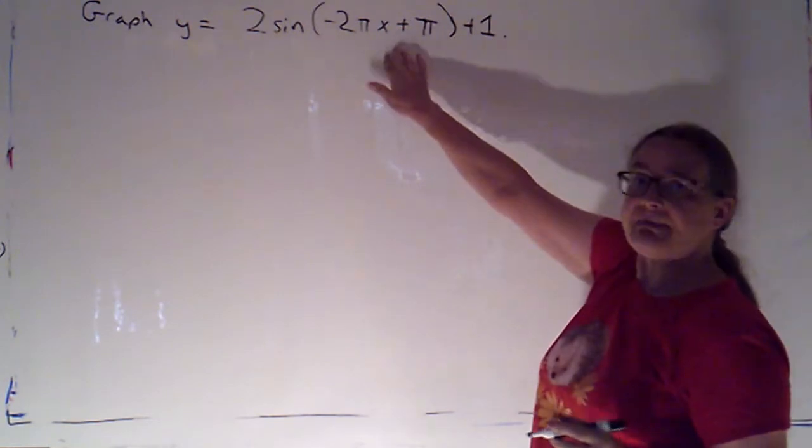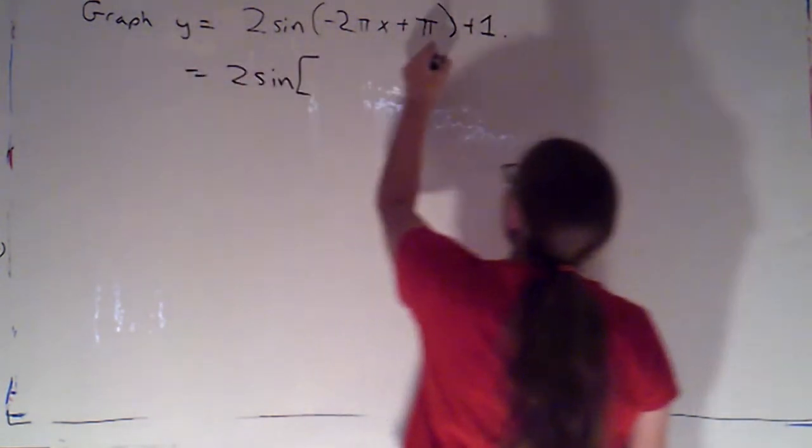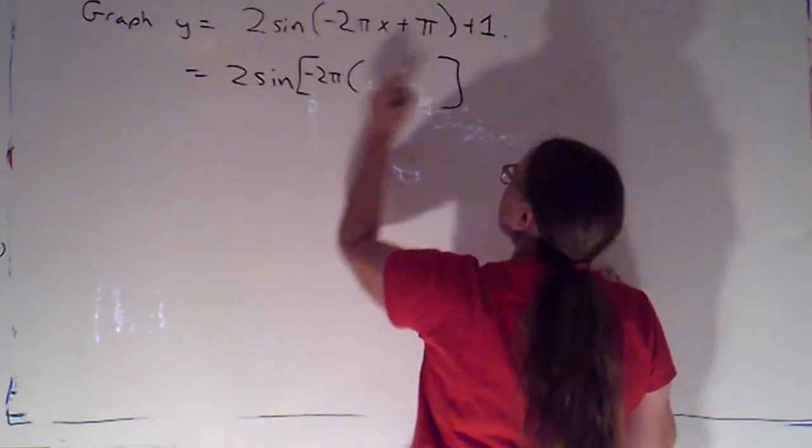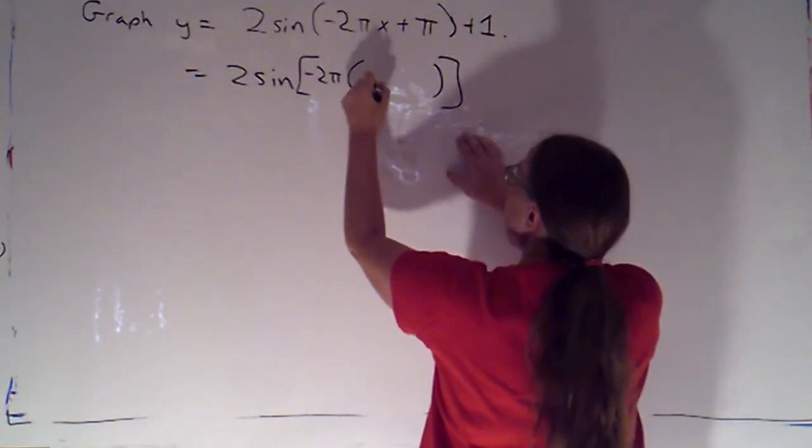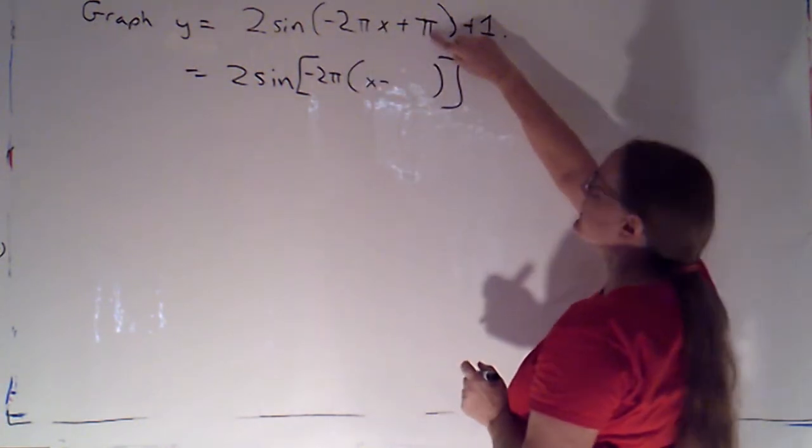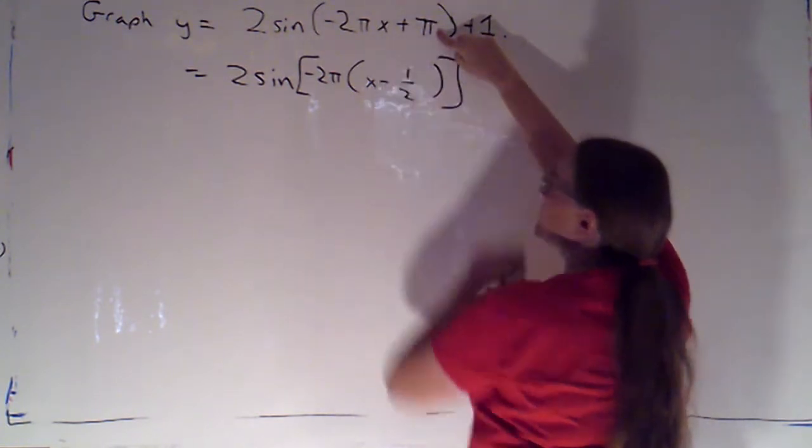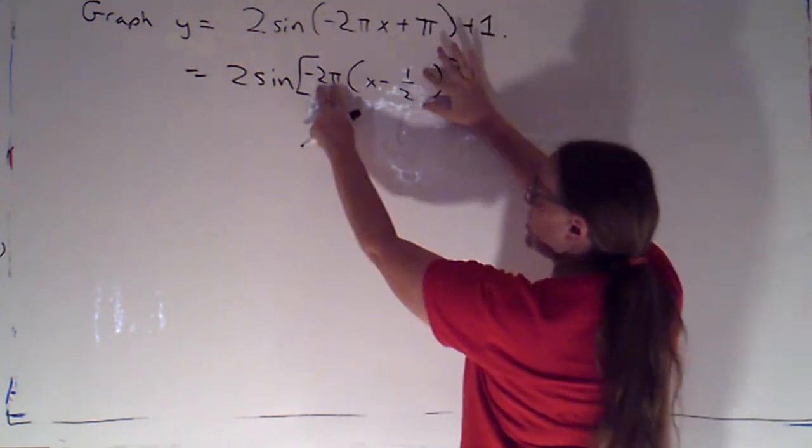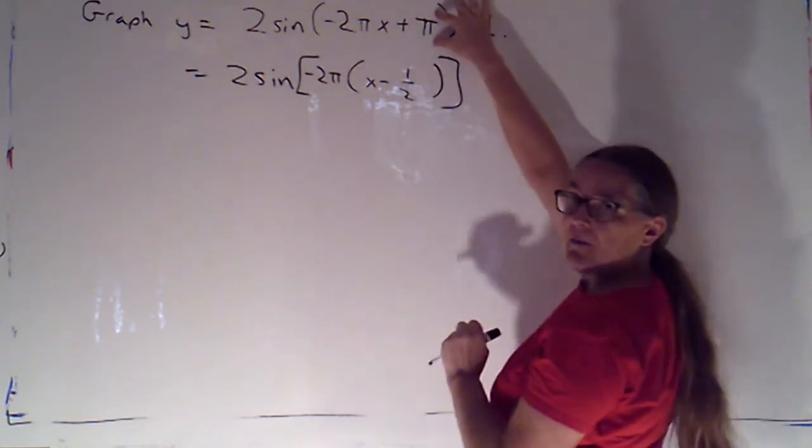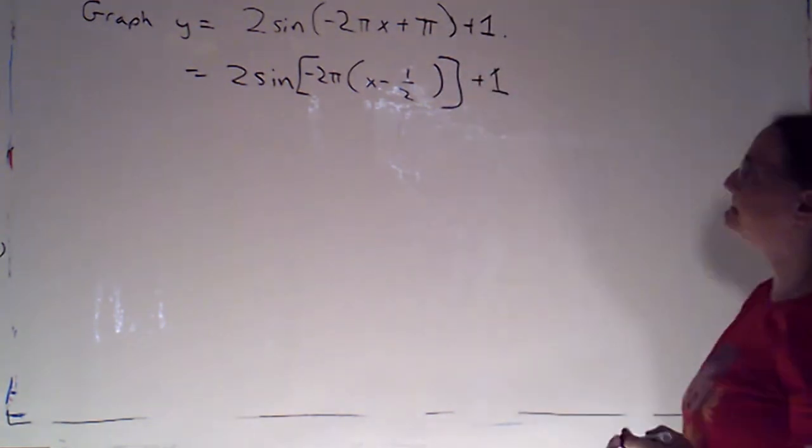So the first thing I want to do is get this input into factored form. So this is 2 sine of, I'm going to factor out that negative 2π. So then that's times the quantity x. Since I'm factoring out a negative, this switches to a negative. And I'm essentially dividing this by 2π, so I'm going to be left with 1/2. But I can double check. If I distribute negative 2π times negative 1/2, that will give me back my plus π. And then don't forget that plus 1.